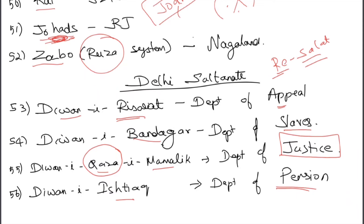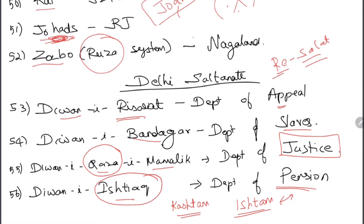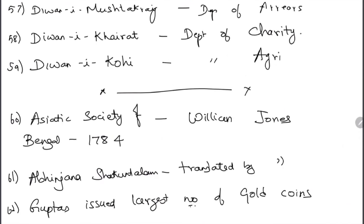Diwani-i-Ishtaq was the department of pension — remember it as 'ishtam' (liked/favored) because with pension you don't work but still get money, which everyone likes. Diwani-i-Mustakhraj was the department of arrears.